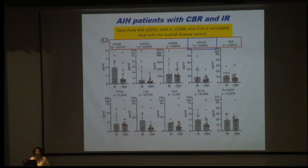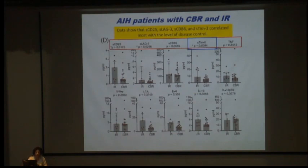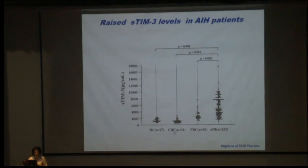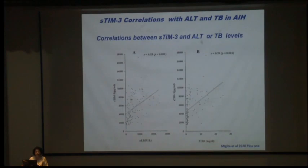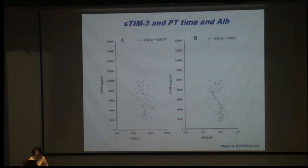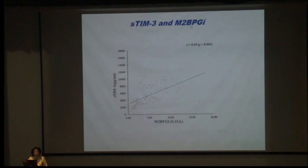Specifically, soluble TIM-3 was decreased in complete biochemical response but increased in incomplete or no-response patients. Another group published in PLOS ONE, examining chronic hepatitis C, PBC, and AIH, found that soluble TIM-3 was a markedly increased marker specifically in AIH and correlated with ALT and total bilirubin — elevated ALT corresponded to elevated soluble TIM-3.